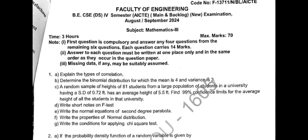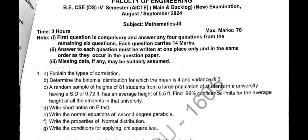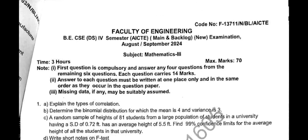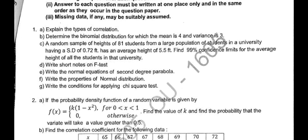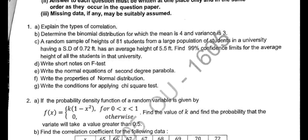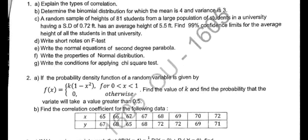Coming to the next paper — this is for Data Science Math, for AI and Data Science students. This is also August/September 2024. For short answers, he gave: explain types of correlation, determine the binomial distribution, find the height of 81 students and find the confidence interval, short notes on F-test, normal equations of second-degree parabola, properties of normal distribution, and G bit is conditions for applying chi-square test.